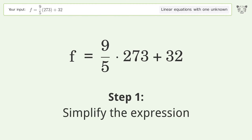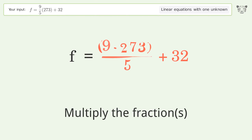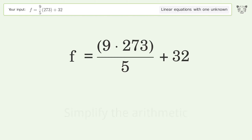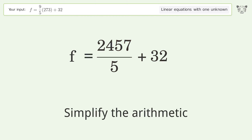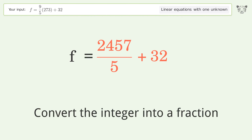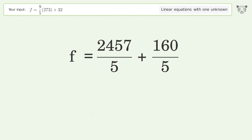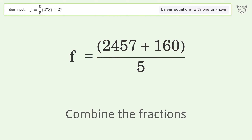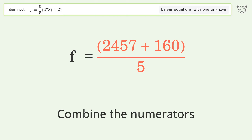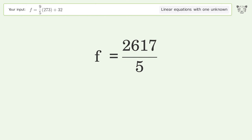Simplify the expression by multiplying the fractions. Simplify the arithmetic, then convert the integer into a fraction. Combine the fractions and combine the numerators. And so the final result is f equals 26 and 17 over 5.